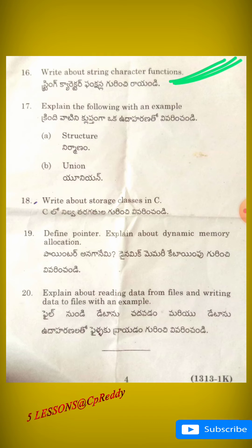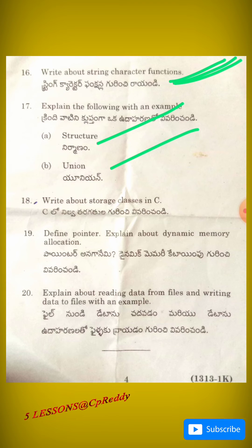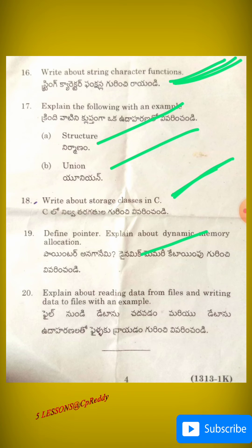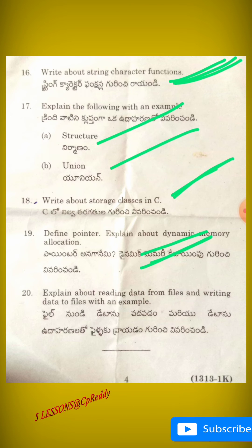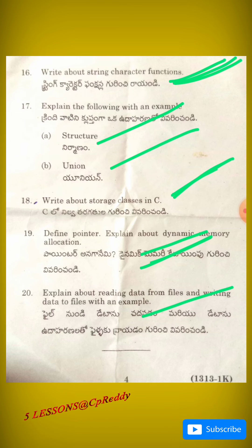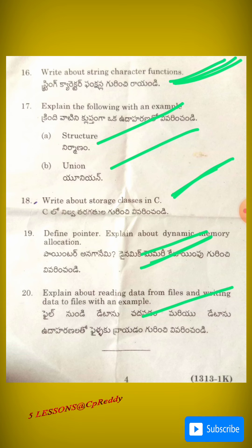Next: explain structures and unions with an example — important. Next: write about storage class in C — these are direct questions and important. Next: define pointers and explain about dynamic memory allocation — this is very important, it is a complicated concept. Next: explain reading data from files and writing data to files with an example.